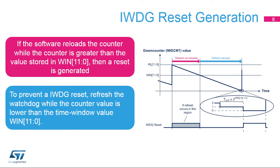This diagram illustrates how the Independent Watchdog operates. When the down-counter reaches zero, the Watchdog Reset is activated — this happens when the application software did not refresh the watchdog on time. If the software refreshes the Watchdog while the down-counter is greater than the value stored in the window register, a reset is generated as well. To prevent a Watchdog Reset, the refresh must occur when the down-counter value is higher than zero and lower than the time window value.